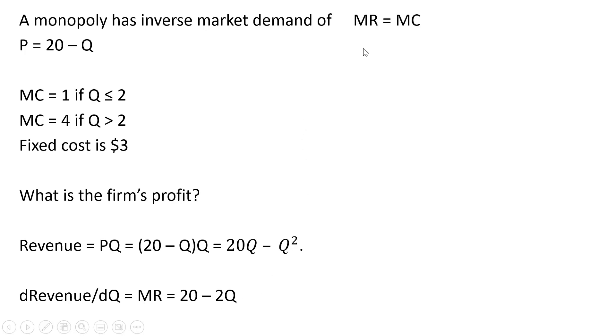We're going to profit maximize by setting marginal revenue equal to marginal cost. Marginal revenue is 20 minus 2Q, and that's going to equal marginal cost 4. We're going to use the bigger number here for marginal cost. Subtracting 4 from both sides and now dividing through by 2, Q equals 8.